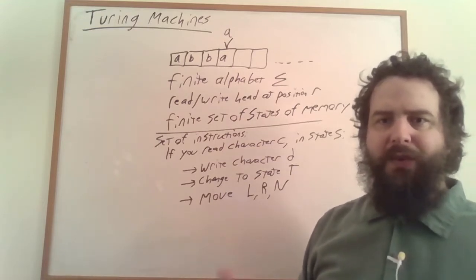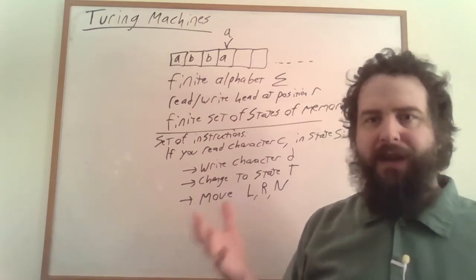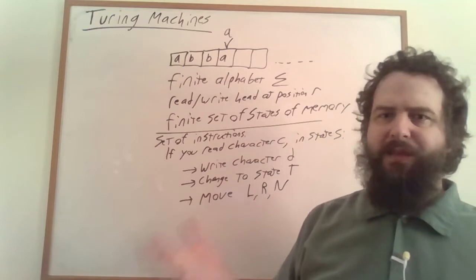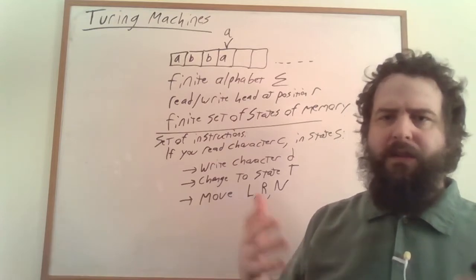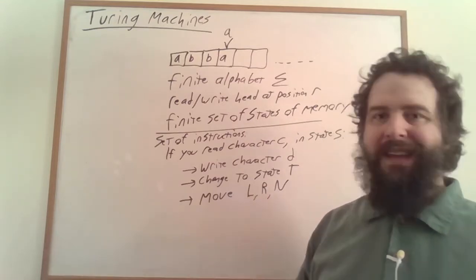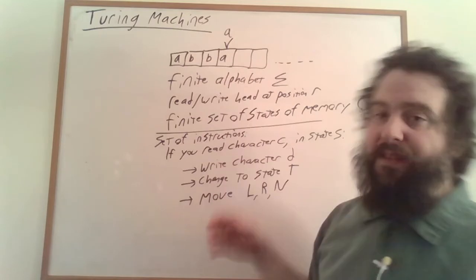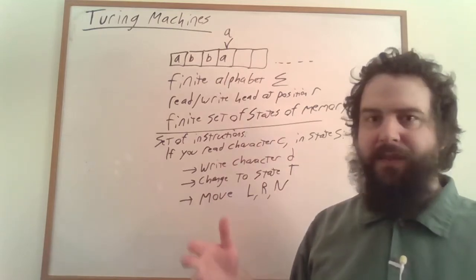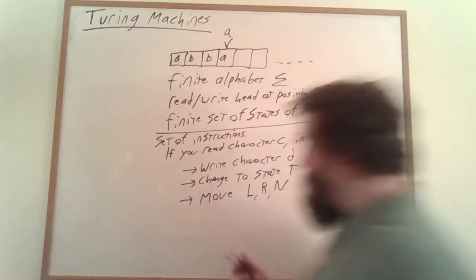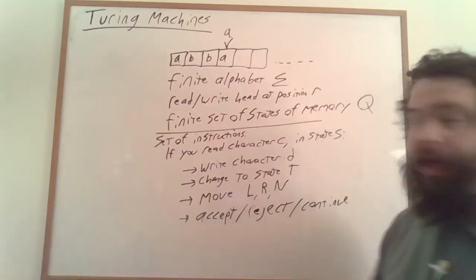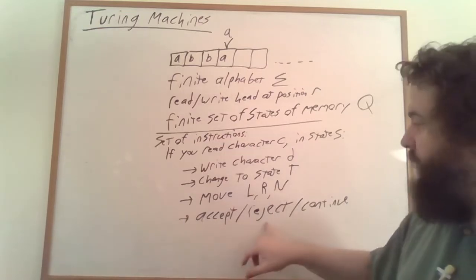We would like it to somehow indicate when it's done. With finite state automata, we know when they're done — they're done when they've finished reading the input, and we can predict exactly how long it's going to take to process a particular input. This Turing machine might get stuck in an infinite loop and not tell us yes or no. But we need some way of the Turing machine indicating when it's done, so if you read a particular character and you're in a particular state, you can either accept, reject, or continue.